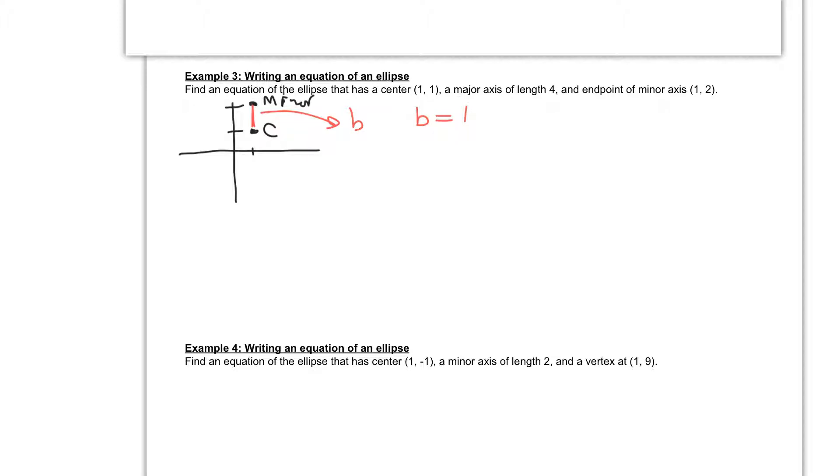Now I also know that my major axis has a length of 4. And my major axis has the equation 2A, or the formula is 2A. So then I know 2A is equal to 4. This is the formula for the major axis, and this is what the major axis is equal to, which tells us that A is equal to 2.